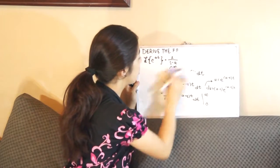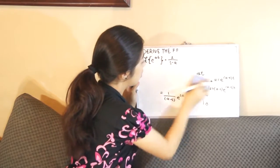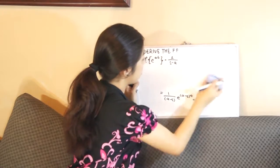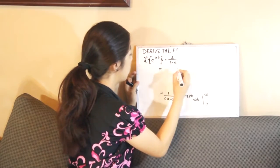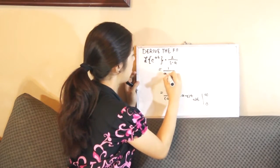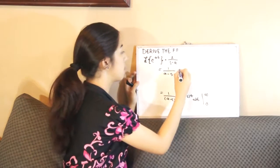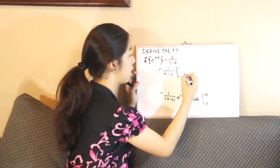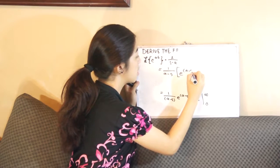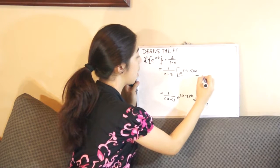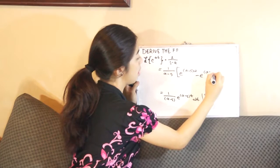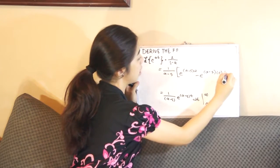So 1 over a minus s is constant, so we can now have it on the other side. Let's evaluate e raised to a minus s infinity minus e raised to a minus s times 0.